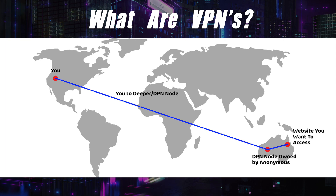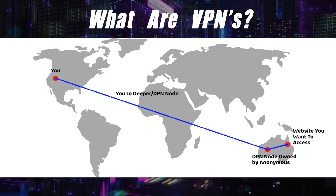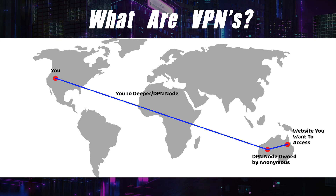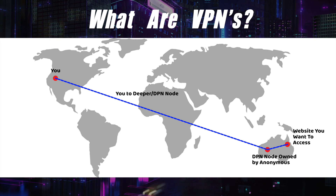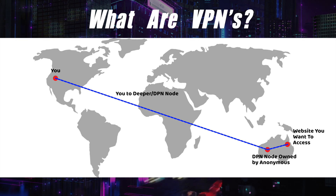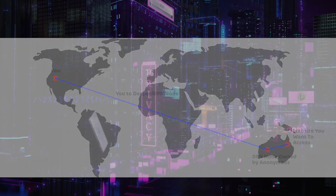So this is basically how it works. You connect to somebody else, and then they connect to the website, and it passes back. With a corporation, it's their commercial networks that do this. With Deeper, you connect to a person's node in their house and use their bandwidth to download the information you actually want.